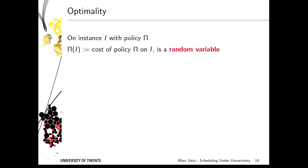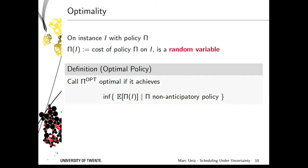One thing to think about is how to define optimality in this setting. When you have a scheduling policy, the cost of the schedule is a random variable, so how do we compare two policies? The simplest approach is to compare their expectations. We call a policy optimal if it achieves the minimum expected performance among all non-anticipatory policies. An optimal policy exists under very mild circumstances — that is proven by a quite general result — and in particular it exists for the setting we consider here.